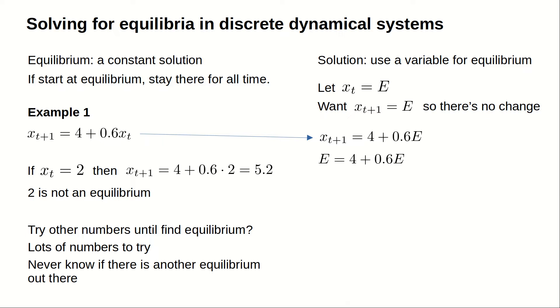Let's solve this equation for E. By subtracting off 0.6E from both sides of the equation, we get the condition 0.4E equals 4. Dividing both sides by 0.4, we get the final answer that E equals 10.